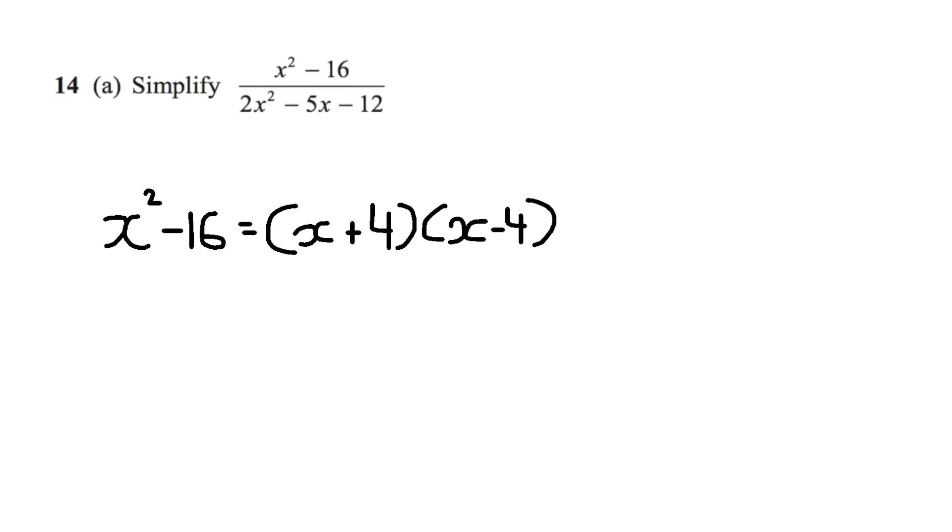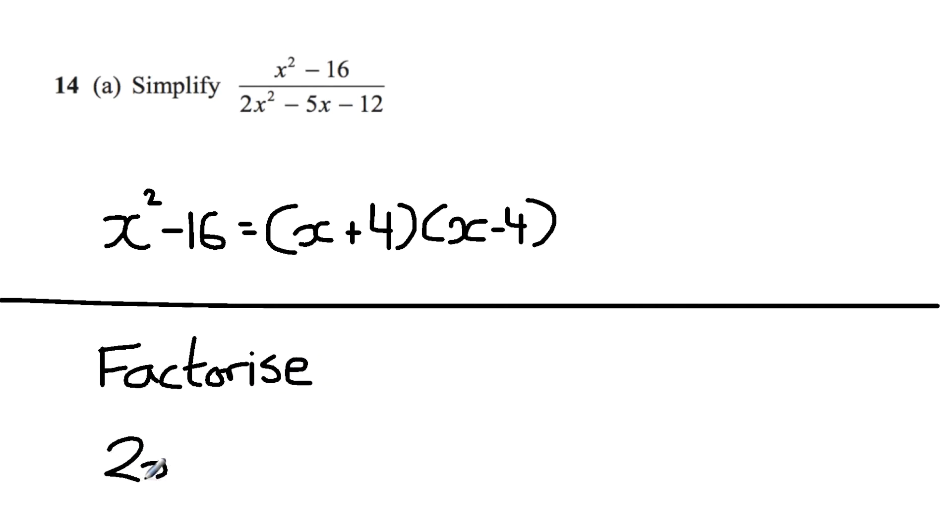Let's have a look at the denominator. We have 2x squared minus 5x minus 12. I'm just going to draw a line and factorise 2x squared minus 5x minus 12.